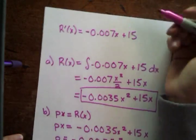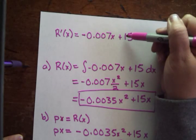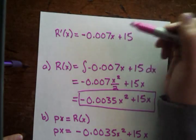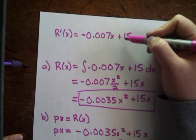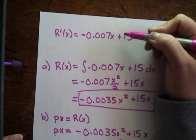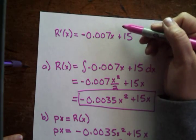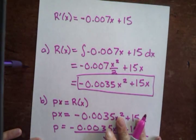Let's go over this again. They give you a marginal revenue function and they want the original revenue function back. Well, the marginal revenue function is just the derivative of the revenue function. So to get back the original function, we have to take the integral.